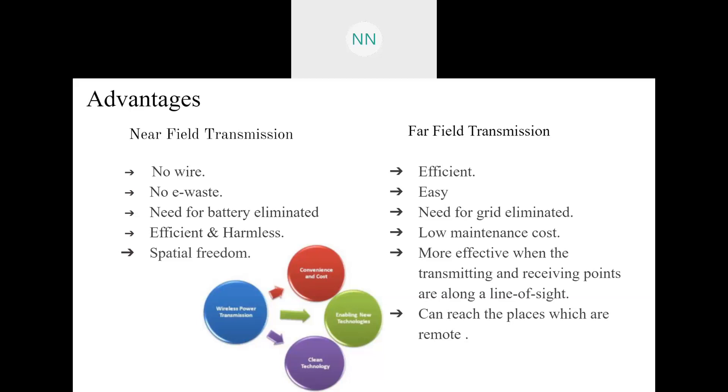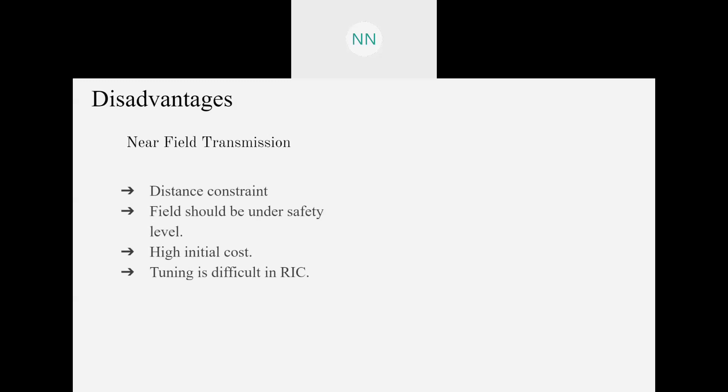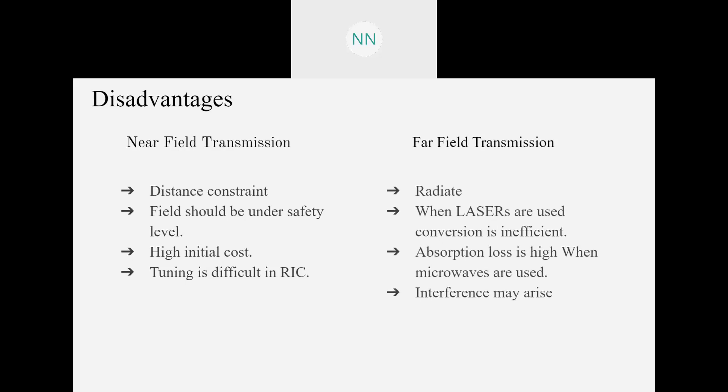Now the disadvantages. The near field transmission, the major disadvantage is obviously the distance constraint. Then the field should be under safe limit or else it could be hazardous to human health. It has high initial cost and tuning is very difficult. In far field transmission, it may radiate and lasers are very hazardous to human health. Absorption loss is very high and interference may also be there. So these are some of the disadvantages of wireless power transmission.